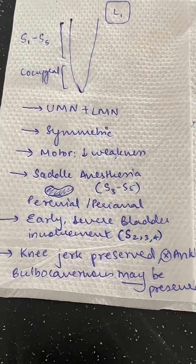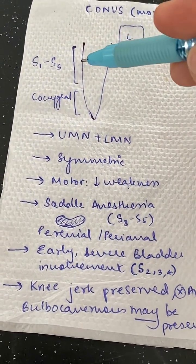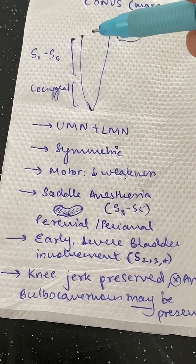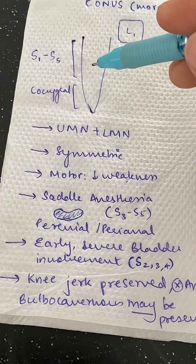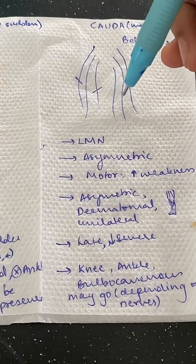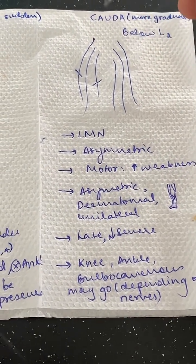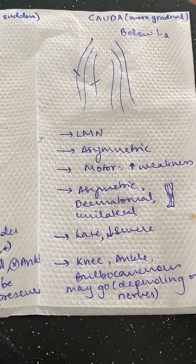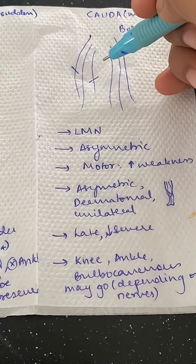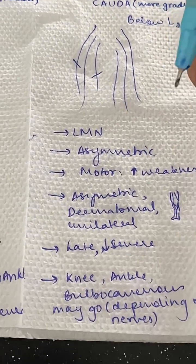Bladder dysfunction in conus is early and severe, because the entire parasympathetic bladder and bowel nuclei are present there at S2, S3, S4. In cauda equina it's a later manifestation, because peripheral parasympathetic nerves are involved and that might not immediately result in bladder dysfunction.